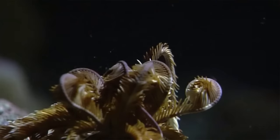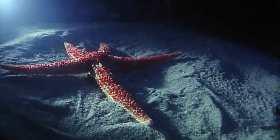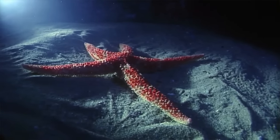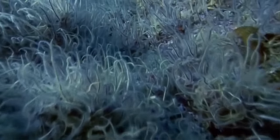Echinoderms are the spiny skinned animals. They're pretty weird. They include forms such as the starfish, the sea urchins, and sea cucumbers, and are a really important part of the ecological systems in the ocean.